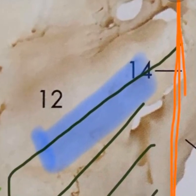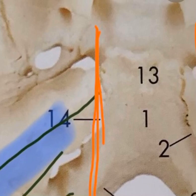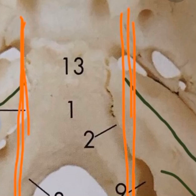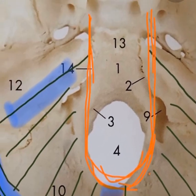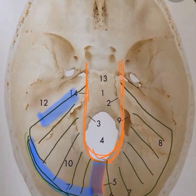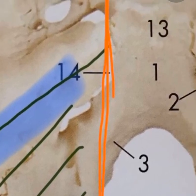The petrous part of the temporal bone is written as 14 here. The attached margin goes above the petrous part of the temporal bone and is attached to the posterior clinoid process. The green color line I have drawn stops here at the posterior clinoid process. So the attached margin starts from the internal occipital protuberance, goes along the lips of the transverse sulcus, then ascends along the petrous part of the temporal bone to the apex, and stops at the posterior clinoid process.